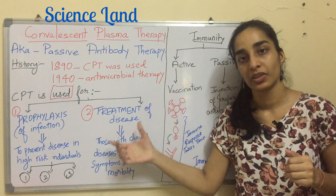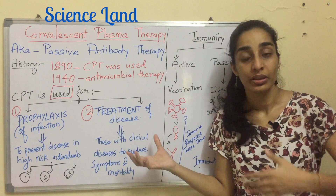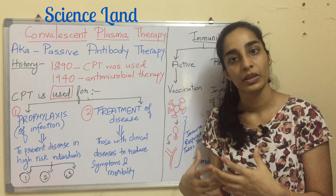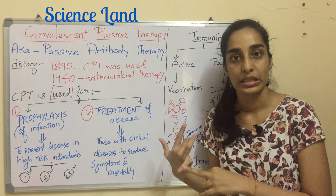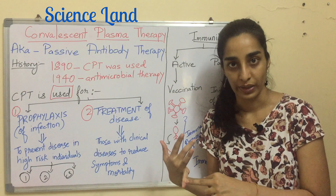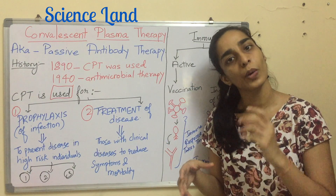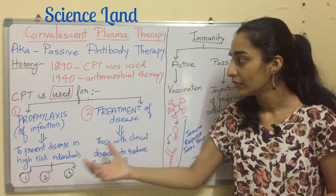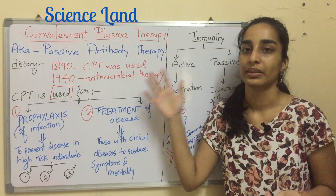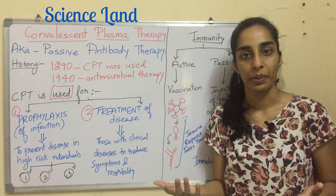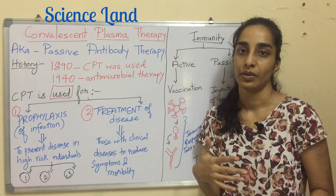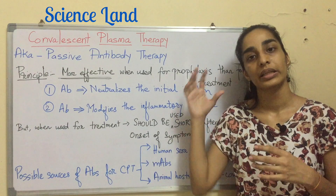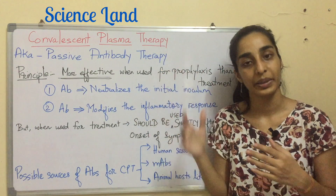Regarding treatment of the disease: the patient already shows medical symptoms. So if a person comes in with COVID-19 with severe pneumonia and other symptoms, you are going to inject antibodies to treat them. That is the main use of convalescent plasma therapy.